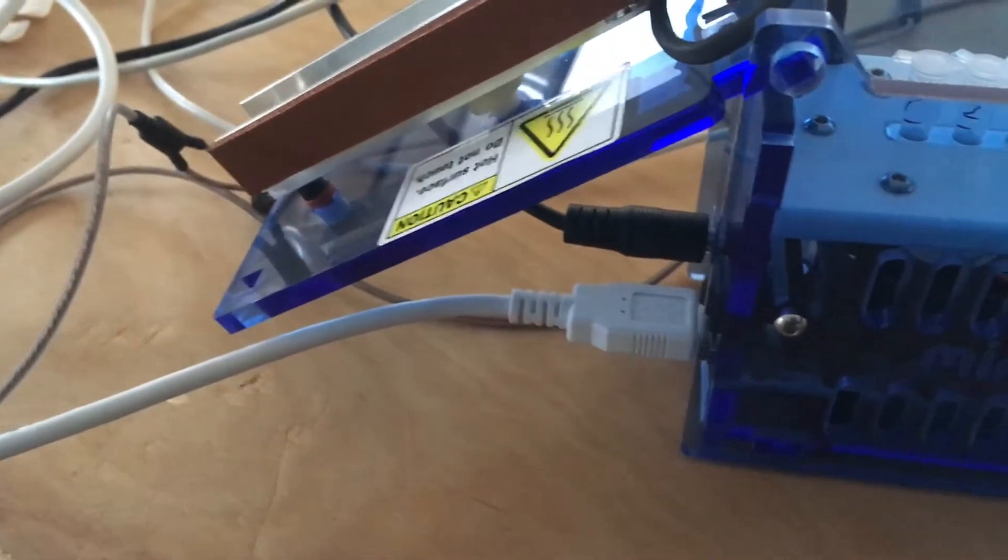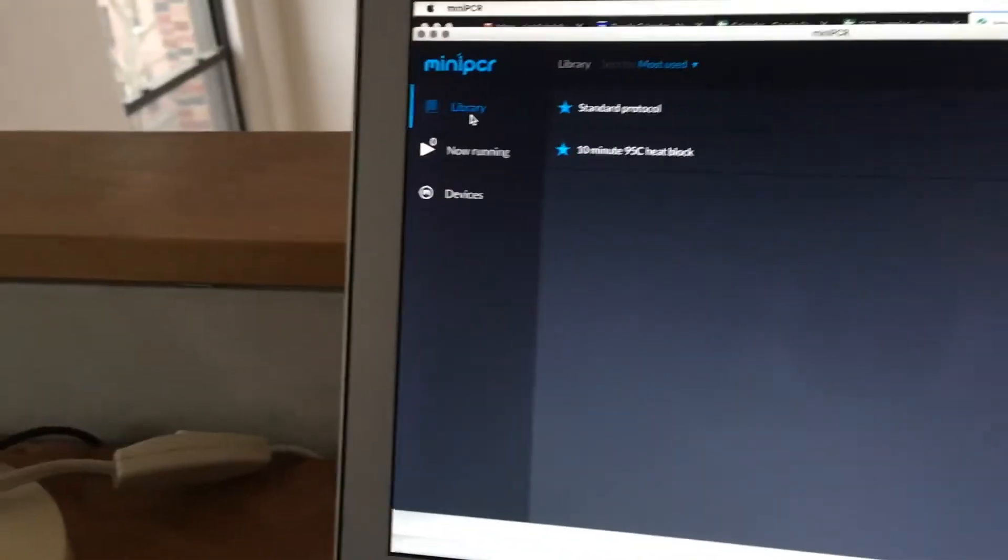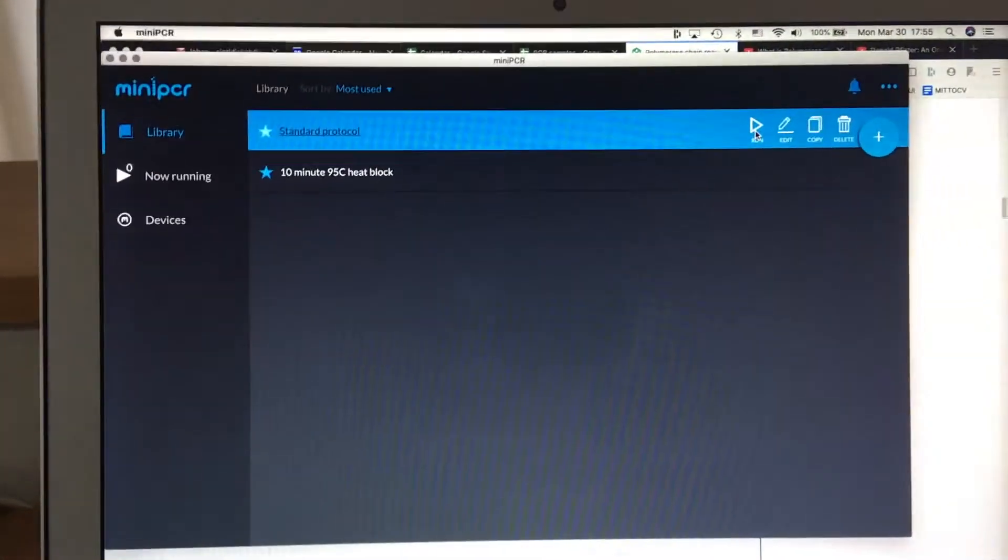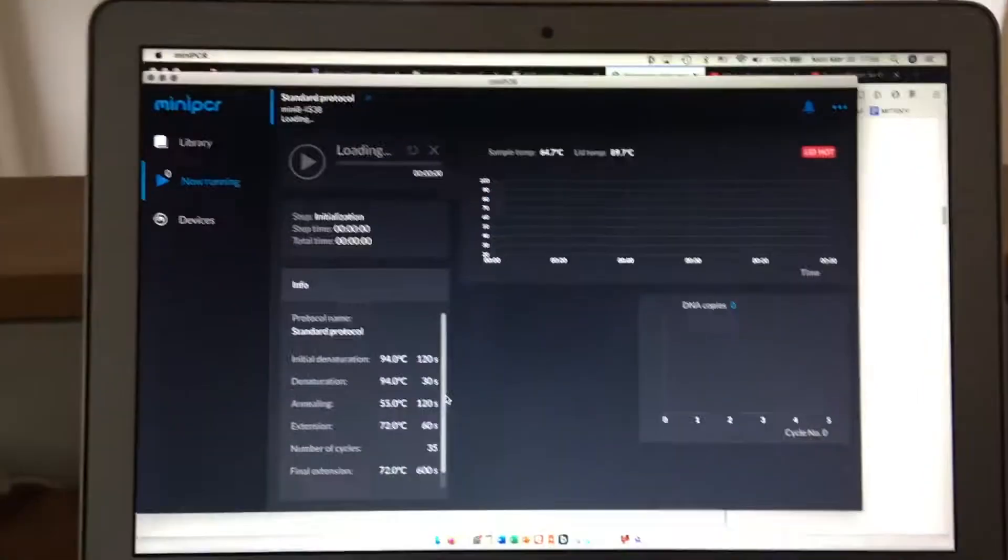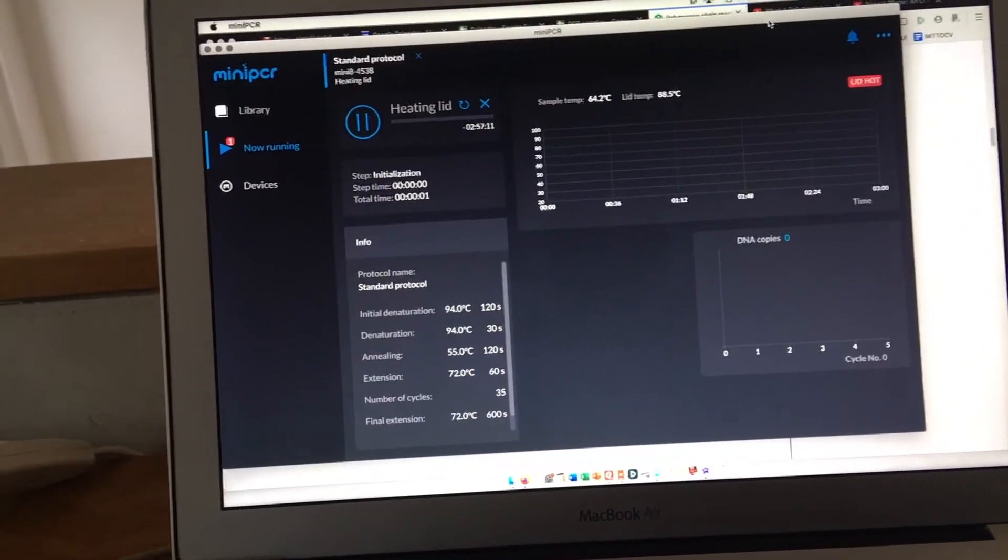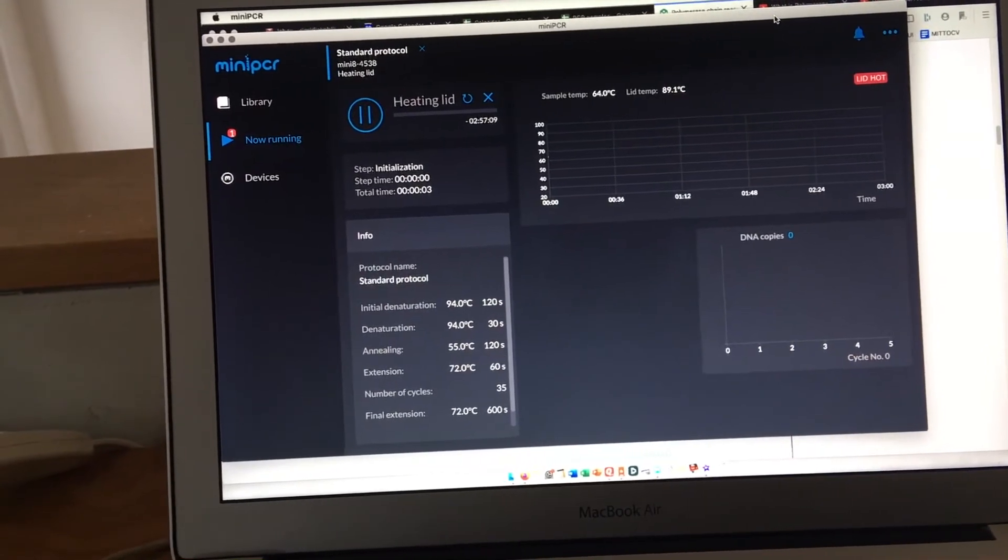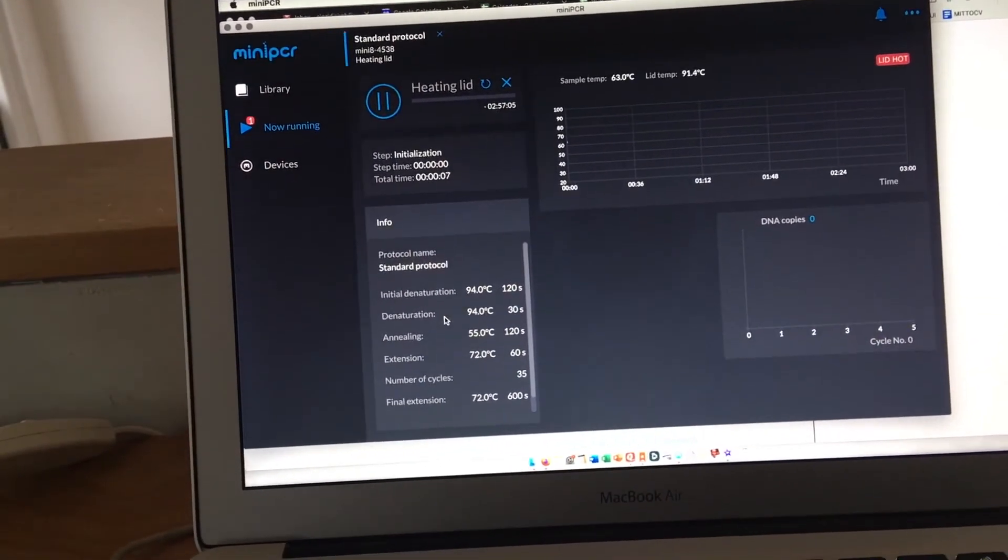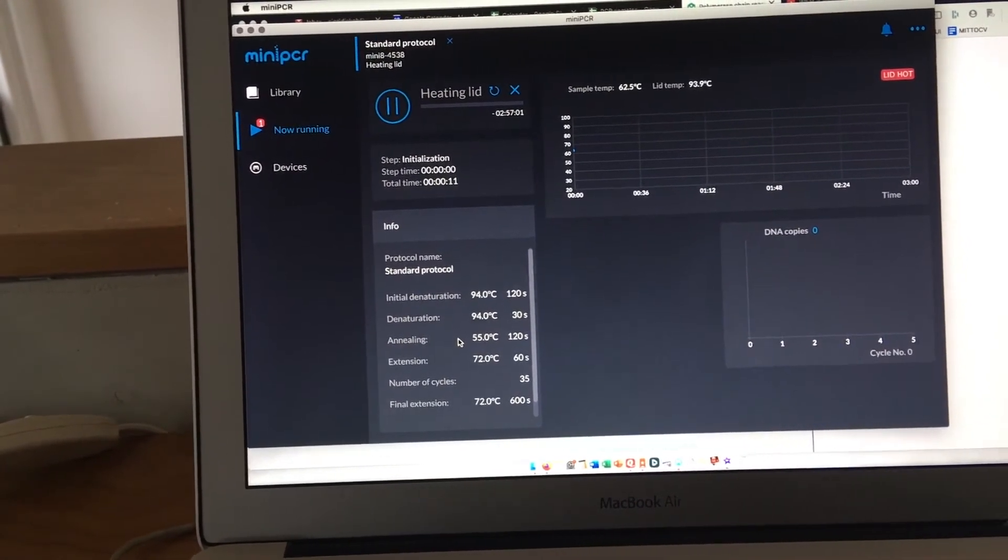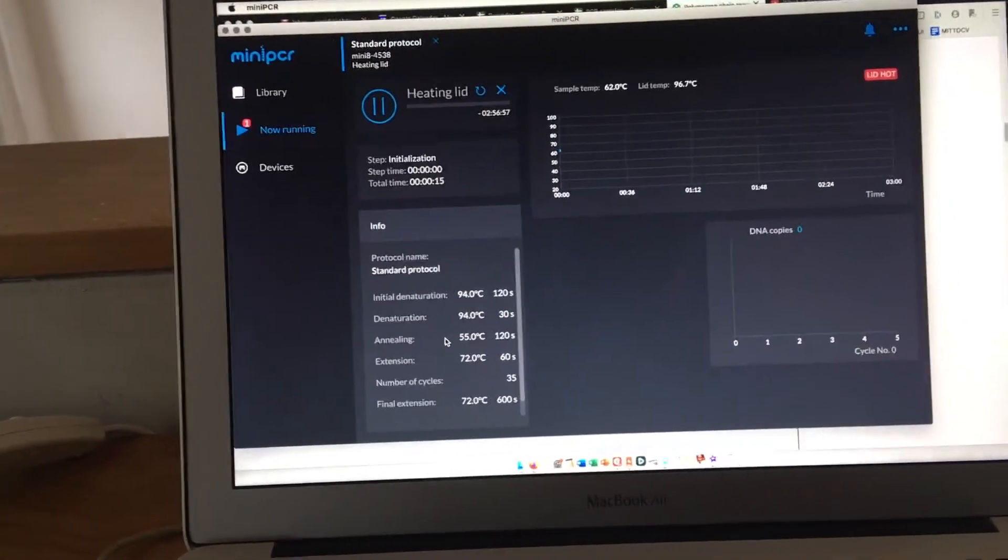We're going to close it, and then we're going to go to the library here. This is my interface, and I've got the standard protocol here, and I'm just going to run that protocol. This shows you what's part of the protocol. There's going to be an initial DNA denaturation where they're going to try and split the DNA, then the denaturation and then the annealing where the primers bind to the ends of the uncoupled strands of DNA.